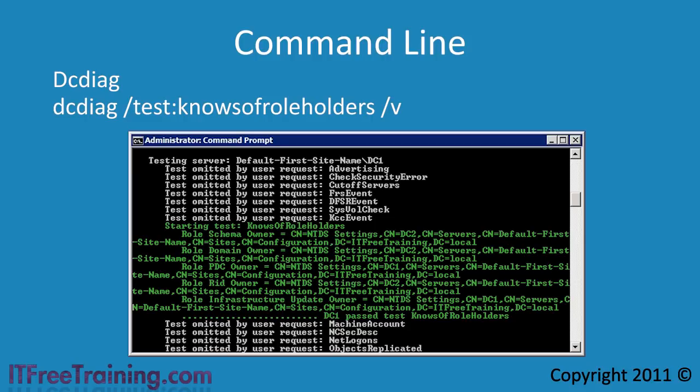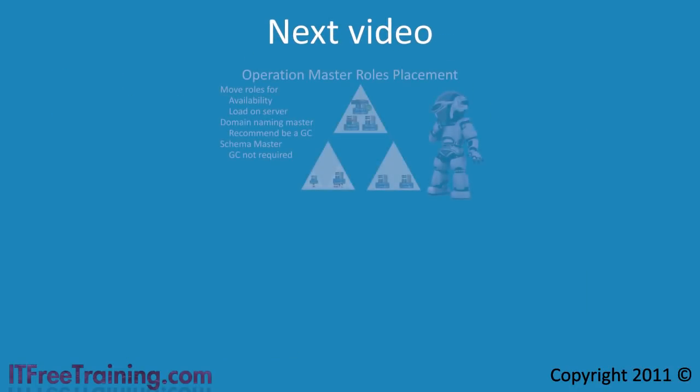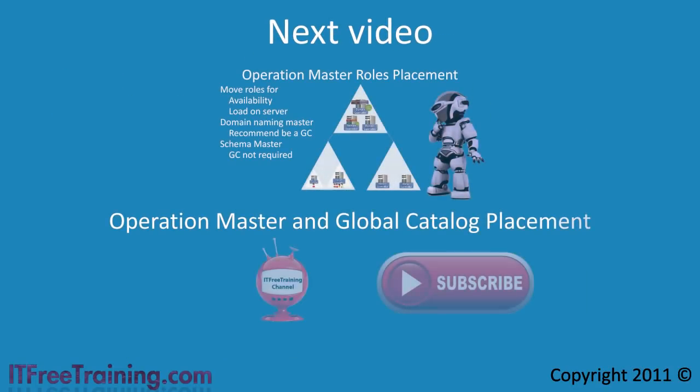This concludes how to move operation master roles around in Active Directory. In the next video I will look in much more detail about which domain controllers you should put these roles on and also which domain controllers you should make global catalog servers. Thanks for watching.